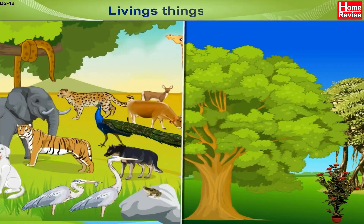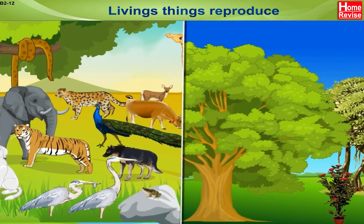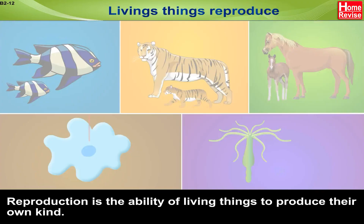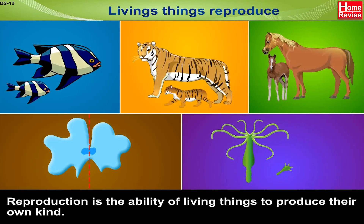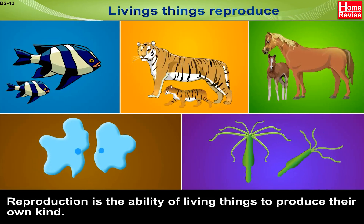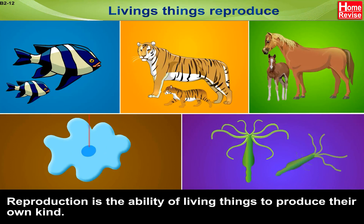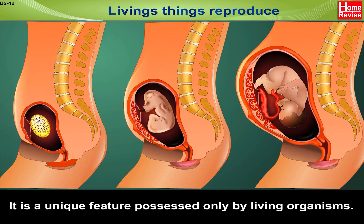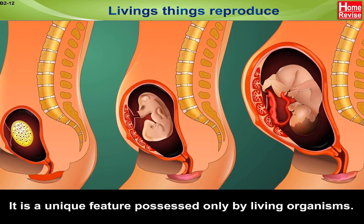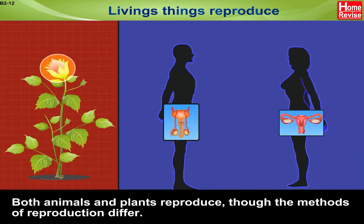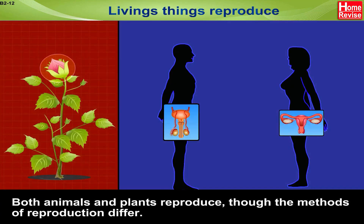Living things — reproduction: reproduction is the ability of living things to produce their own kind. It is a unique feature possessed only by living organisms. Both animals and plants reproduce, though the methods of reproduction differ.